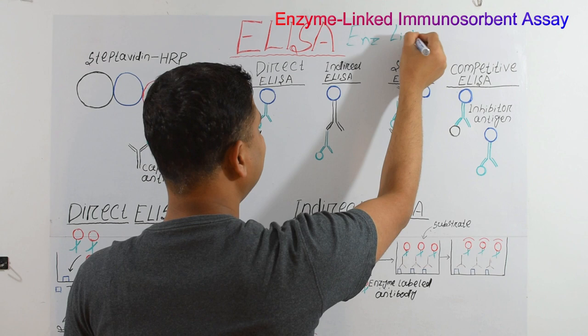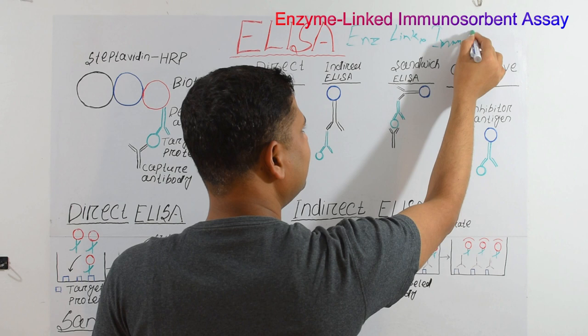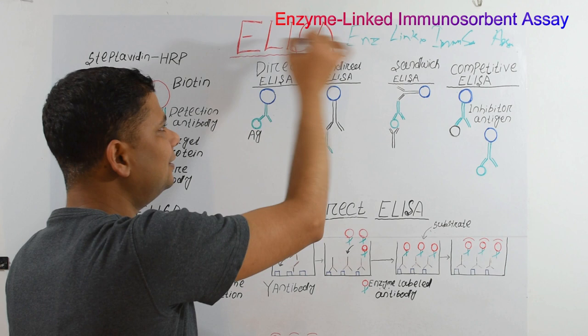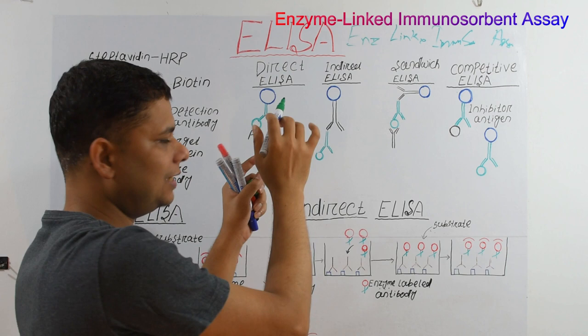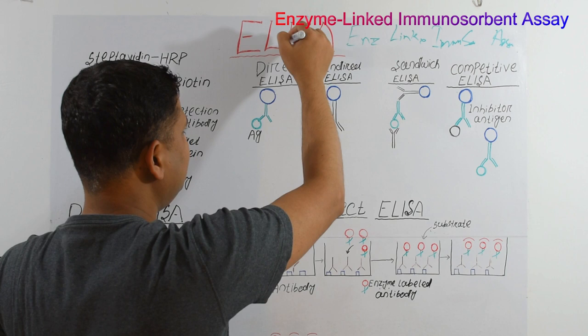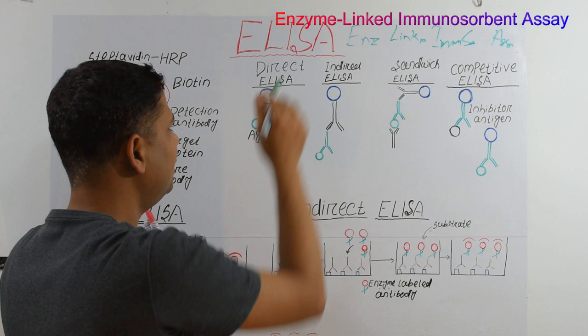Why is it called Enzyme Linked Immunosorbent Assay? Because the assay is linked to an enzyme which gives us the detection level, and 'immunosorbent' is because we are using an antibody fixed and adsorbed to the surface.